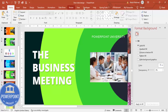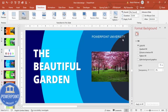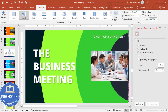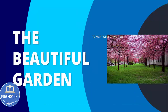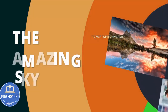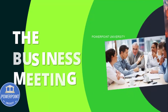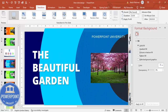Select the slides with text, go to Transitions, and under Effect Options change the morph setting to Character. Note that changing this will reset the duration to two seconds, so set it back to one second. Now preview the full sequence: 'The Beautiful Garden,' 'The Business Meeting,' 'The Amazing Sky' — you can see the text morphing beautifully. This is how you can make beautiful slides with this concept.